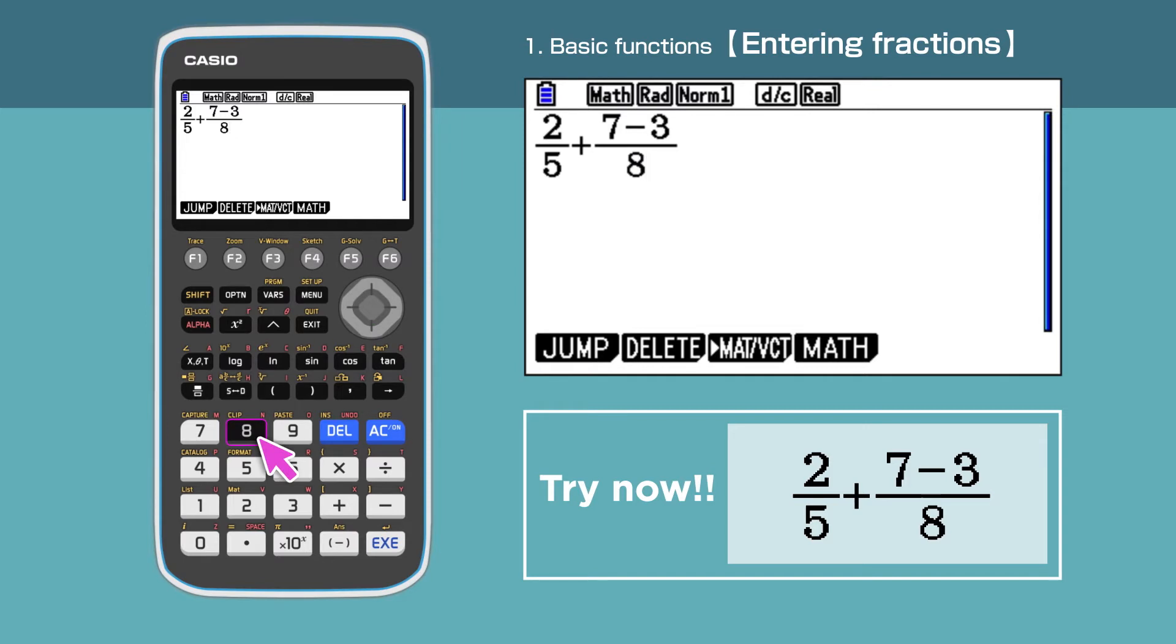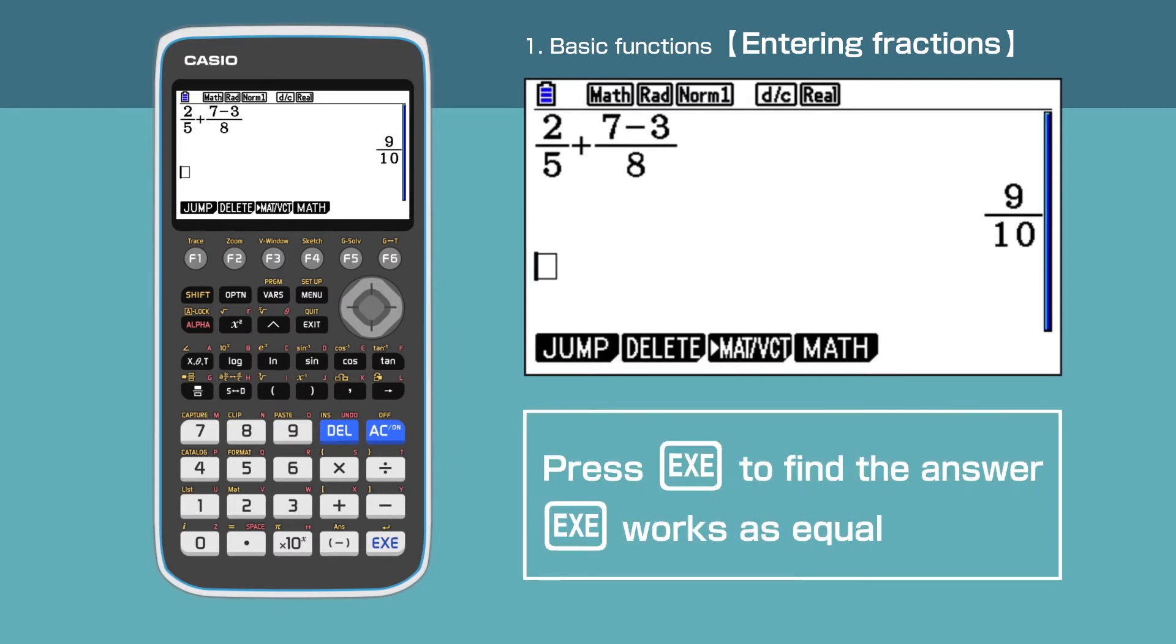Press the execute button to calculate. For this calculator, we use execute to find the answer - there's no equal sign button. The answer is 9 over 10, presented as a fraction.